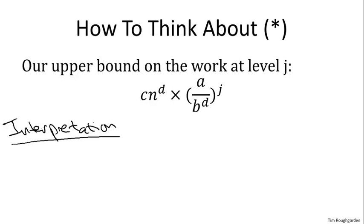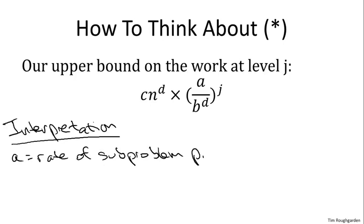What's really going on in the master method is a tug of war between two opposing forces — forces of good and forces of evil — and those correspond to the quantities B to the D and A respectively. A is defined as the number of recursive calls made by the algorithm, i.e., the number of children a node in the recursion tree has. Fundamentally, A is the rate at which subproblems proliferate as you pass deeper in the recursion tree — the factor by which there are more subproblems at the next level than the previous one. Let's call this the rate of subproblem proliferation, or RSP.